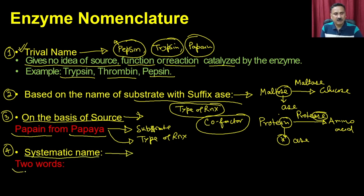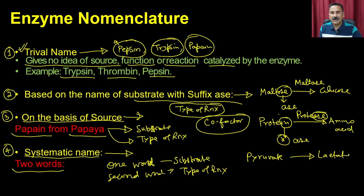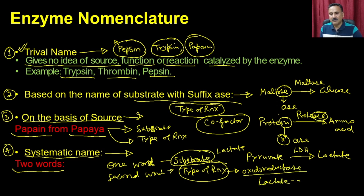People then came up with the systematic name, using two words: the first word for the type of substrate being utilized, and the second word for the type of reaction. For example, pyruvate is converted into lactate — the substrate is lactate and the type of reaction is an oxidoreductase reaction, so the name is lactate dehydrogenase because it is a dehydrogenation reaction.